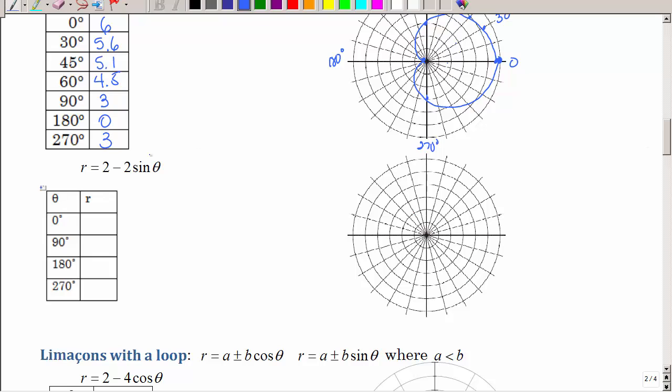So let's look at this one. Let's see if I don't have to use a calculator. So it's good practice. So R equals 2 minus 2 times the sine of theta. Well, the sine of 0 is 0, so that would be 2. The sine of 90 is 1. So that's going to be 2 minus 2, which is 0.